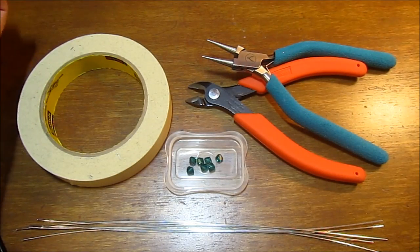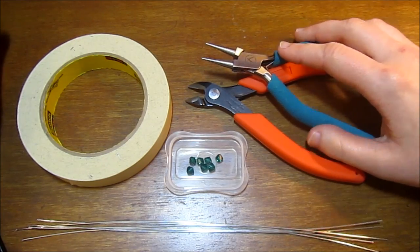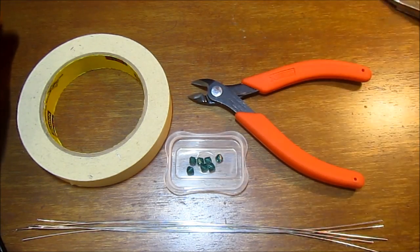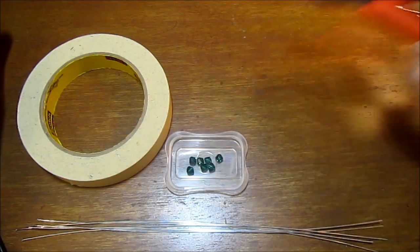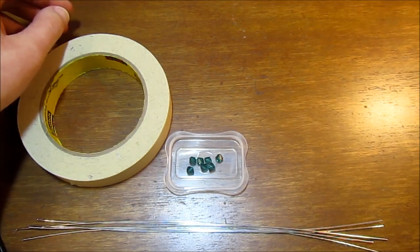To make this bracelet, we're going to need first of all round nose pliers and flush cutters. I'm using Weber's brand and Zuron. Everybody always seems to want to know what brand I'm using, so there you go.